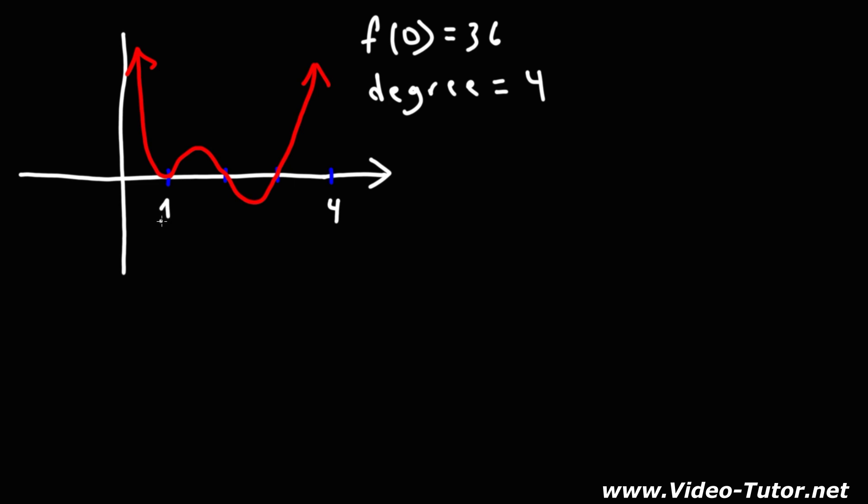So we have an x-intercept at 1, another x-intercept at 2, and another one at 3. So we can write the zeros of the polynomial function, which are x equals 1, x equals 2, and x equals 3. Now once you know the zeros of the polynomial function, you can write the factors.